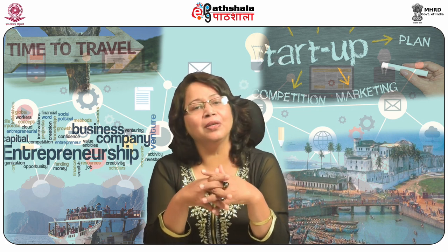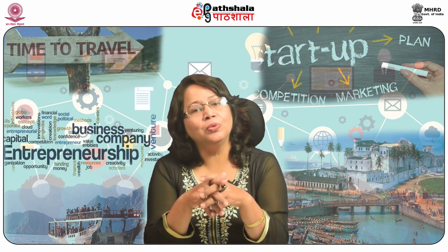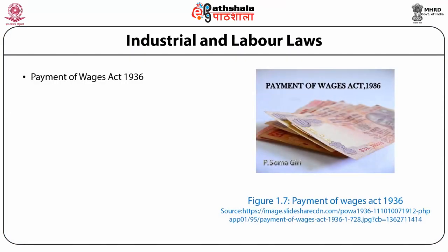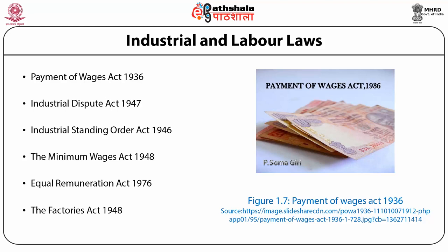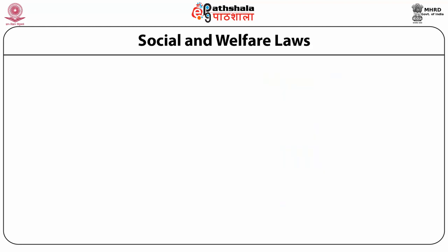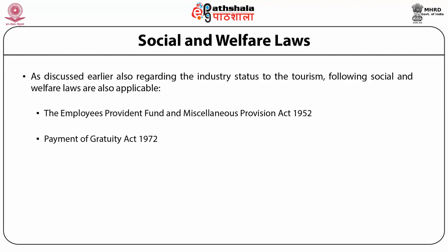Hence it can be concluded that the following industrial and labor laws are also applicable to the tourism industry: Payment of Wages Act 1936, Industrial Dispute Act 1947, Industrial Standing Order Act 1946, the Minimum Wages Act 1948, Equal Remuneration Act 1976, and The Factories Act 1948. Regarding social and welfare laws, the following are also applicable: The Employees Provident Fund and Miscellaneous Provident Act 1952, Payment of Gratuity Act 1972, and Workman Compensation Act 1923.